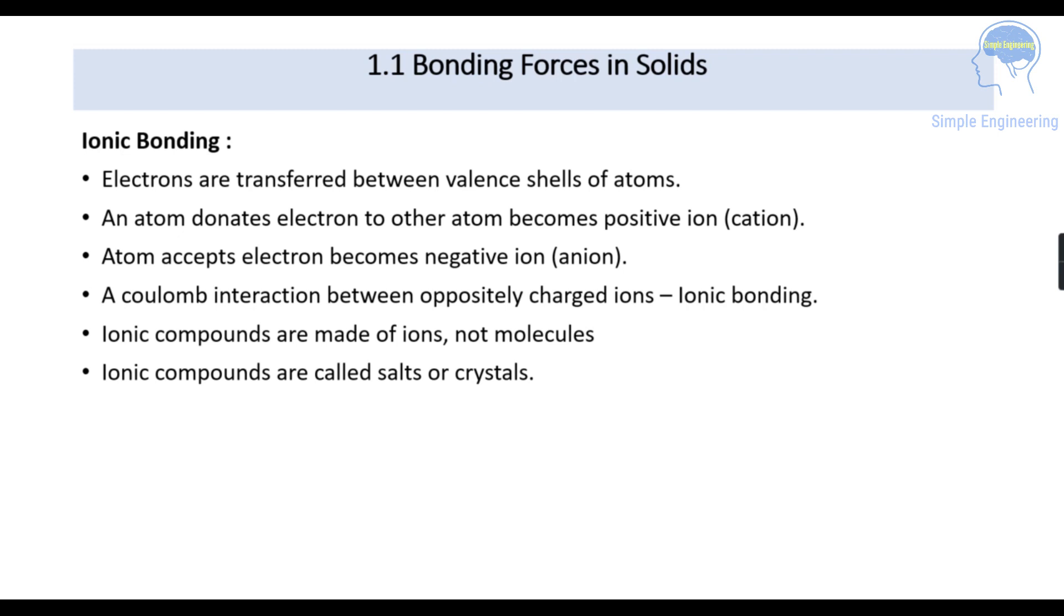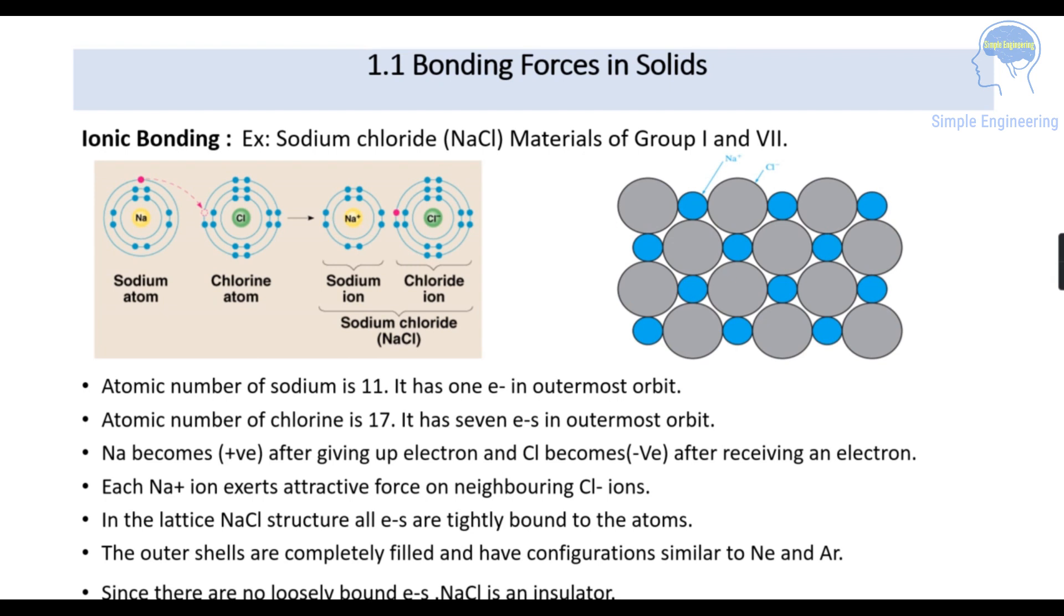Coulomb interaction between oppositely charged ions is called ionic bonding. Ionic compounds are made of ions and not molecules. Ionic compounds are also called salts or crystals. Ionic bonding we can explain with the help of sodium chloride NaCl.